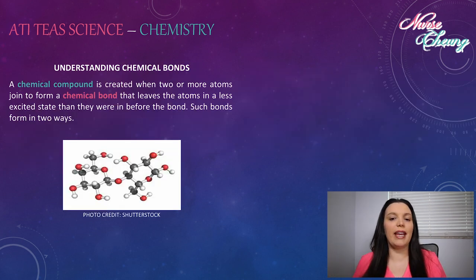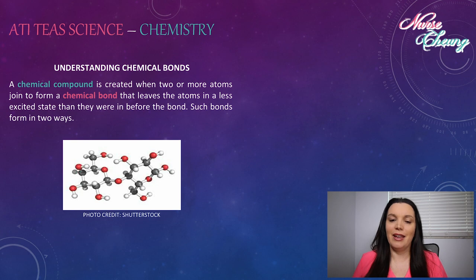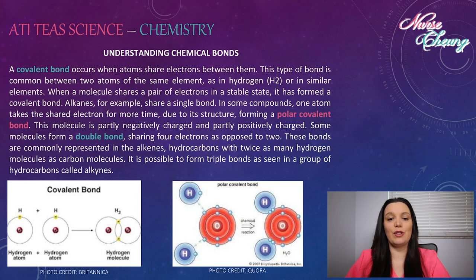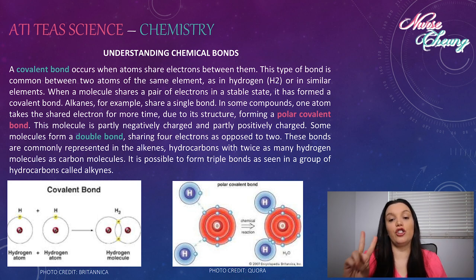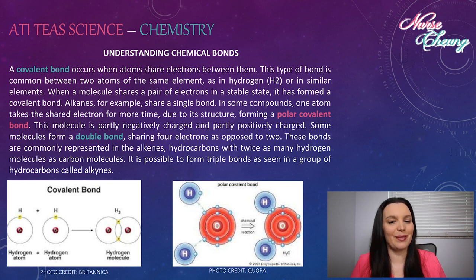A chemical compound is created when two or more atoms join to form a chemical bond that leaves the atoms in a less excited state than they were before they had the bond. Such bonds are formed in two ways. A covalent bond occurs when atoms share electrons between them. This type of bond is common between two atoms of the same element, such as hydrogen H2, or in similar elements. When a molecule shares a pair of electrons in a stable state, it has formed a covalent bond.